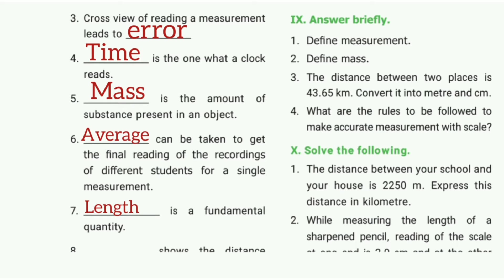Third one: Careless reading of a measurement leads to dash. The answer is error. Fourth one: Dash is what a clock reads. The answer is time. Fifth one: Dash is the amount of matter present in an object. The answer is mass.